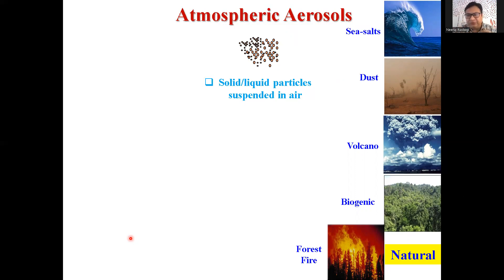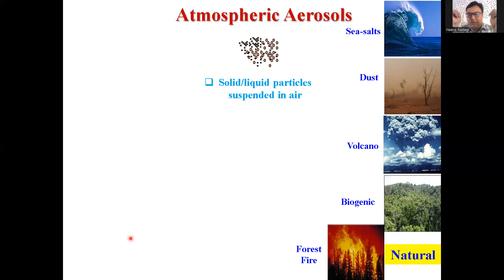Same way, wind-blown dust we have seen every now and then. Then volcanoes — they are not a source of aerosol every day; it happens once in a while, but it puts huge amounts of aerosol into the atmosphere. And then biogenic sources — from trees or plants, there are pollens or leaf fragments; once they become very fine particles they move in the air. And forest fires, which happen every now and then. So these are all the natural sources of aerosols in the atmosphere.